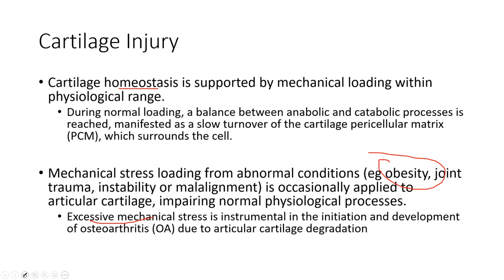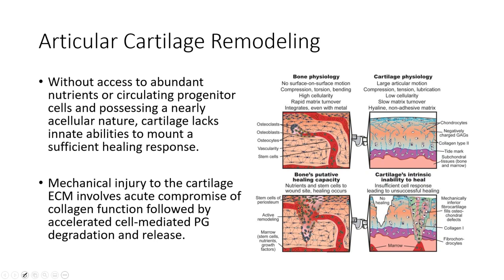Excessive mechanical stress is instrumental in the initiation and development of osteoarthritis, all going back to disruption of cartilage metabolism and homeostasis. It's really hard for cartilage to heal by itself. It does have some capacity to remodel, but without abundant nutrients or progenitor cells, cartilage lacks the innate ability to mount a sufficient healing response, especially if severely damaged.